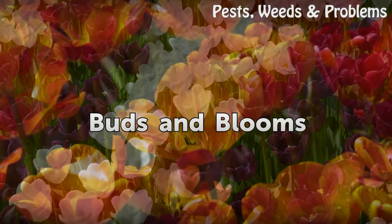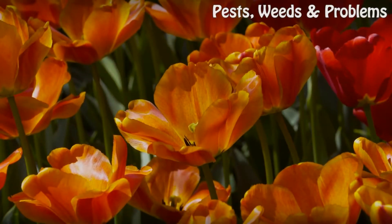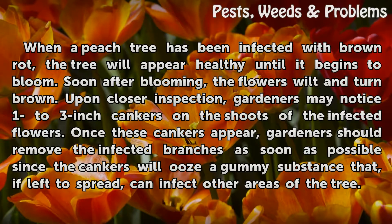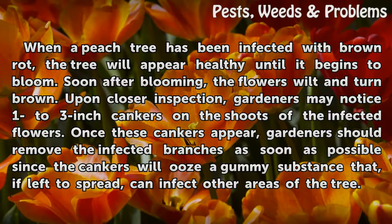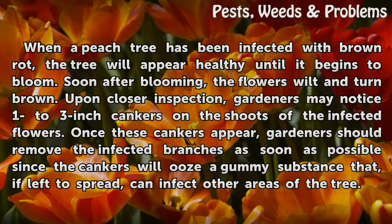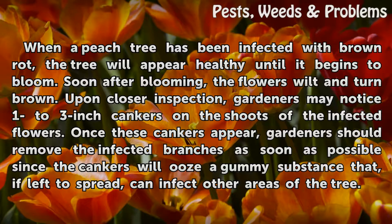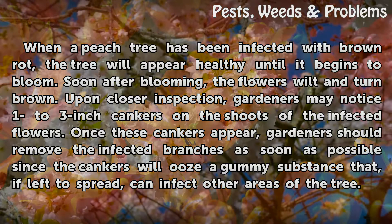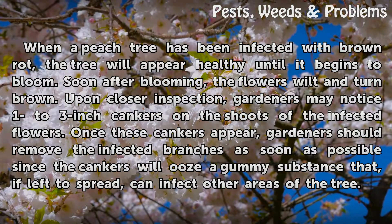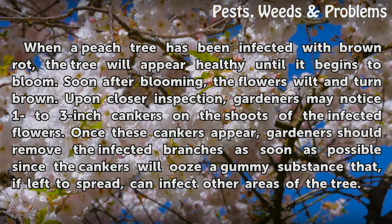Buds and Blooms. When a peach tree has been infected with brown rot, the tree will appear healthy until it begins to bloom. Soon after blooming, the flowers wilt and turn brown. Upon closer inspection, gardeners may notice 1 to 3-inch cankers on the shoots of the infected flowers. Once these cankers appear, gardeners should remove the infected branches as soon as possible, since the cankers will ooze a gummy substance that, if left to spread, can infect other areas of the tree.